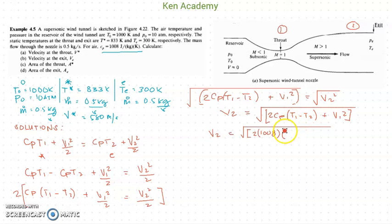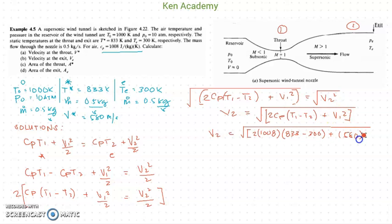Substituting: cp = 1008 J/(kg·K), T1 is the temperature of the throat which is 833 Kelvin, T2 is 300 Kelvin, and V1 squared — V1 is 580.23 meters per second, squared.